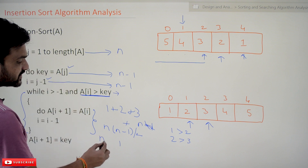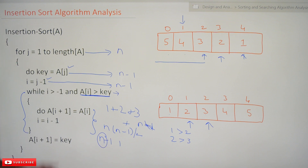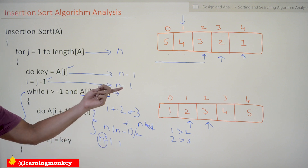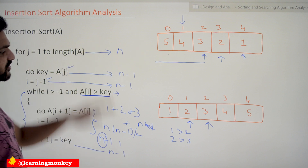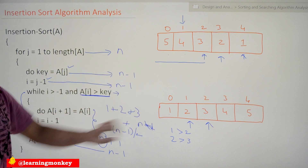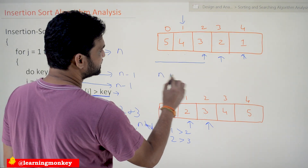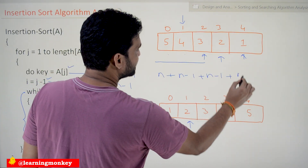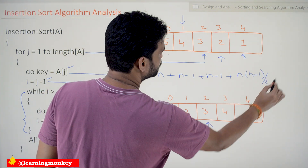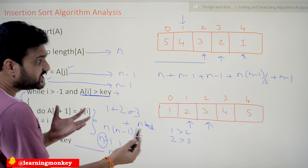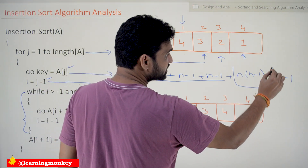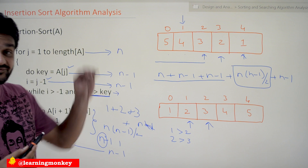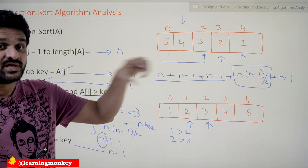In best case, the number of comparisons done by the while loop is n minus 1, because we skip the first element. This is the same as the execution count for the assignment lines. Now summing all terms in the worst case: n + (n-1) + (n-1) + n(n-1)/2 + (n-1). Do we need to consider lower order terms? The order of growth is determined by the higher order term.